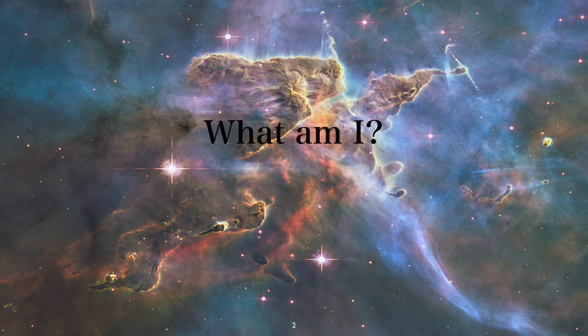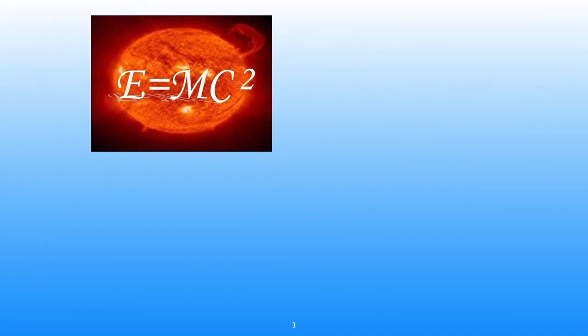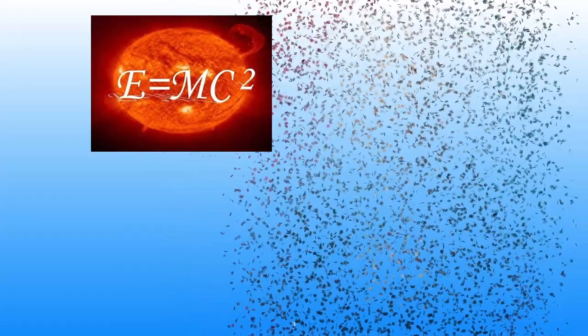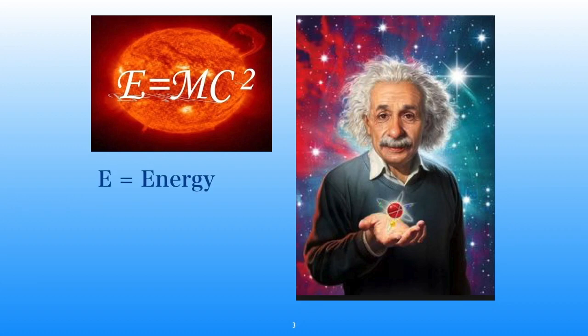What we're really going to be working with today is beginning with the question: what am I? We're first going to bring in this wonderful equation that we're all familiar with. We may not totally understand what it means, but we understand that this incredible genius, Albert Einstein, put together something that says E equals MC squared, where E is energy. What he's saying is that everything can be equal to energy. The way you find out how much energy is really there, you take M for mass, which is equal to anything you can see, touch, and feel in this world around you.